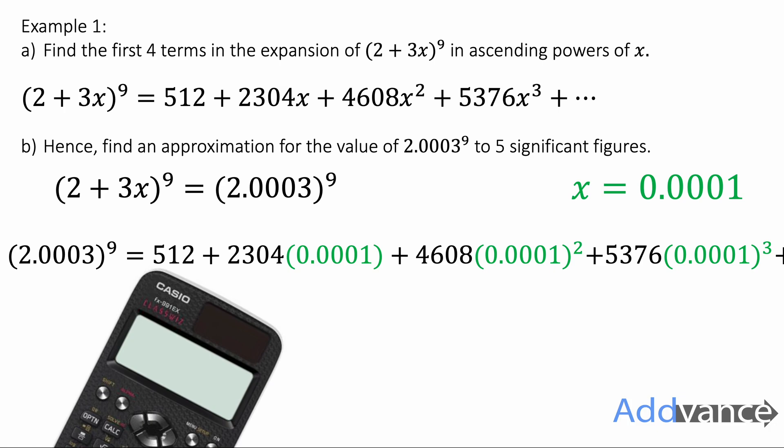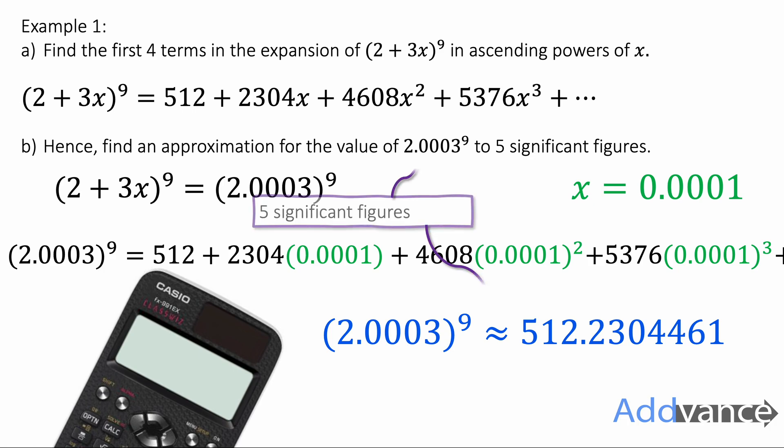Try typing that in yourself and you should get 2.0003 to the power 9 is approximately equal to 512.2304461. And we can round that to 5 significant figures as 512.23. If you type this into your calculator as 2.0003 to the power 9, you will get a number extremely close to 512.23. And this is a very efficient way of approximating decimals to high powers. And this is how you should do it in your exam.